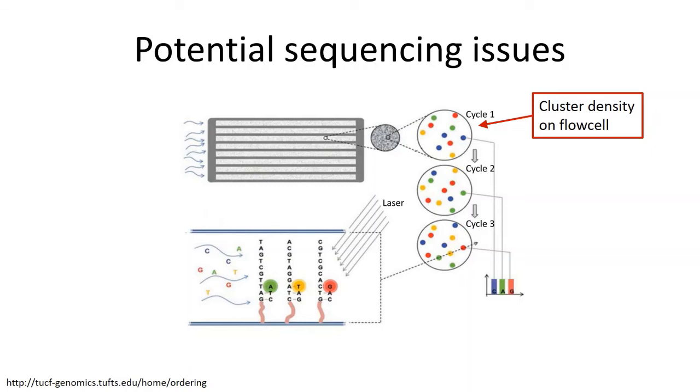If the clusters are too close together, then the camera doesn't have the resolution to actually differentiate those clusters on the slide. If you have too low cluster density, then you're wasting a lot of money because you're not actually sequencing as many things as you could be. So cluster density is important.